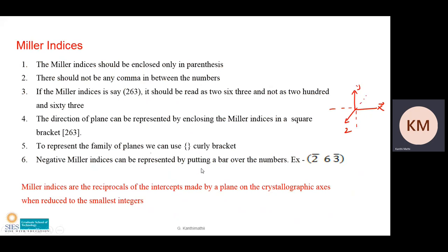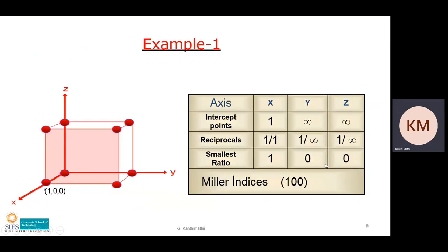If represented by curly brackets, it is a family of planes. Negative Miller indices are also possible — since a crystal depends on direction, negative axis representations exist. If a crystal plane cuts along a negative axis, it is represented by a bar over the number. For example, bar-2 represents an intercept at minus two.